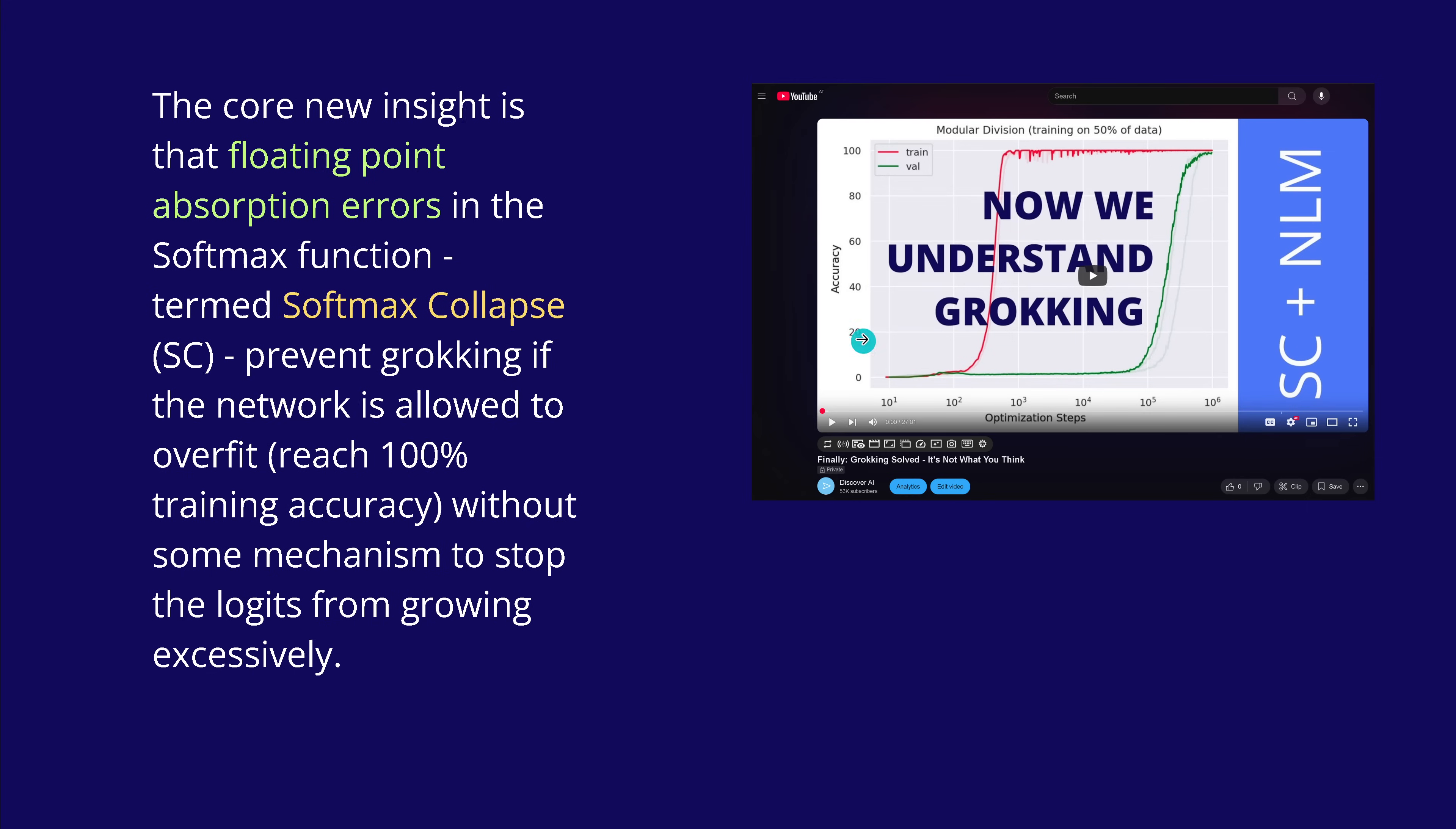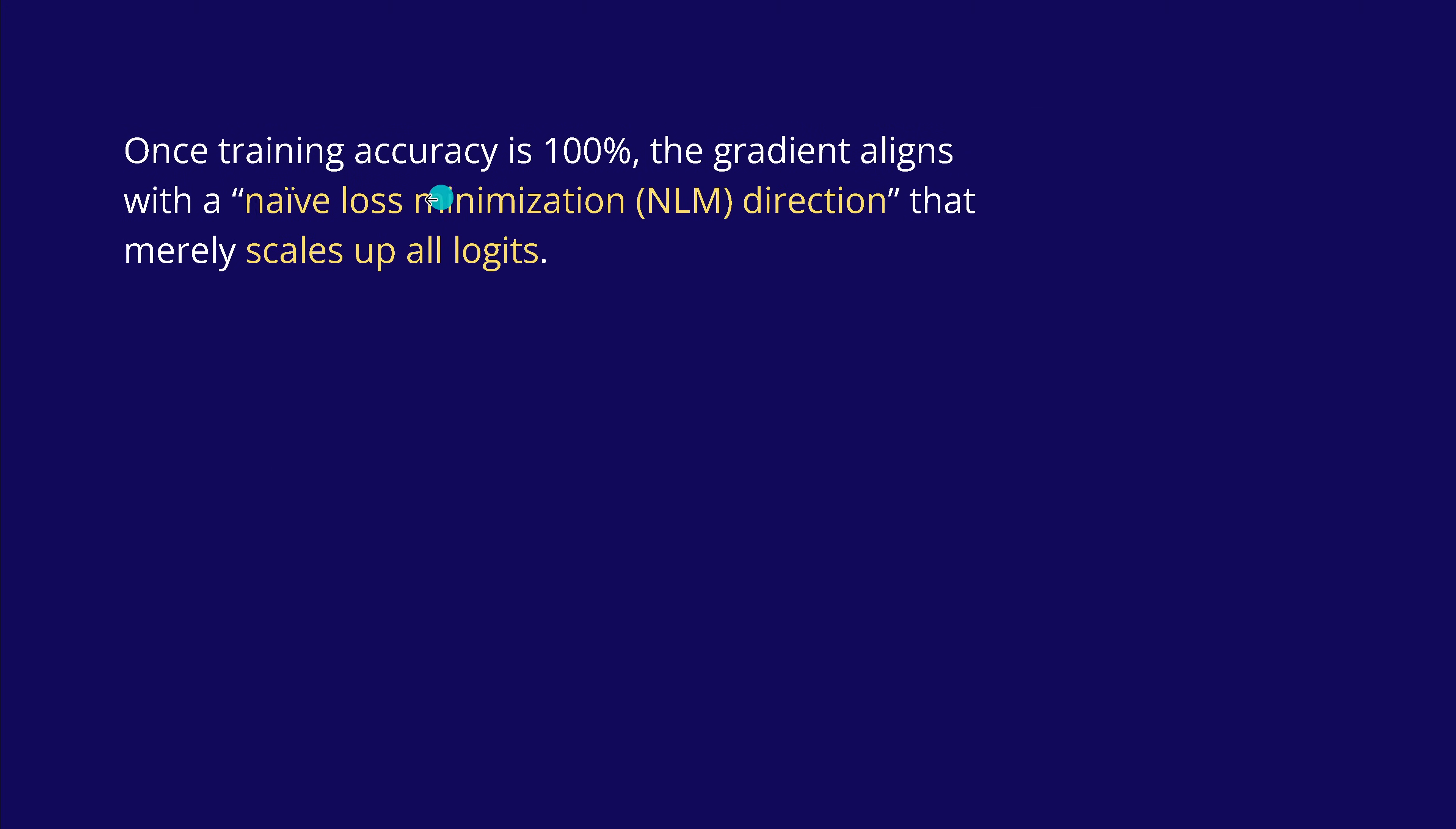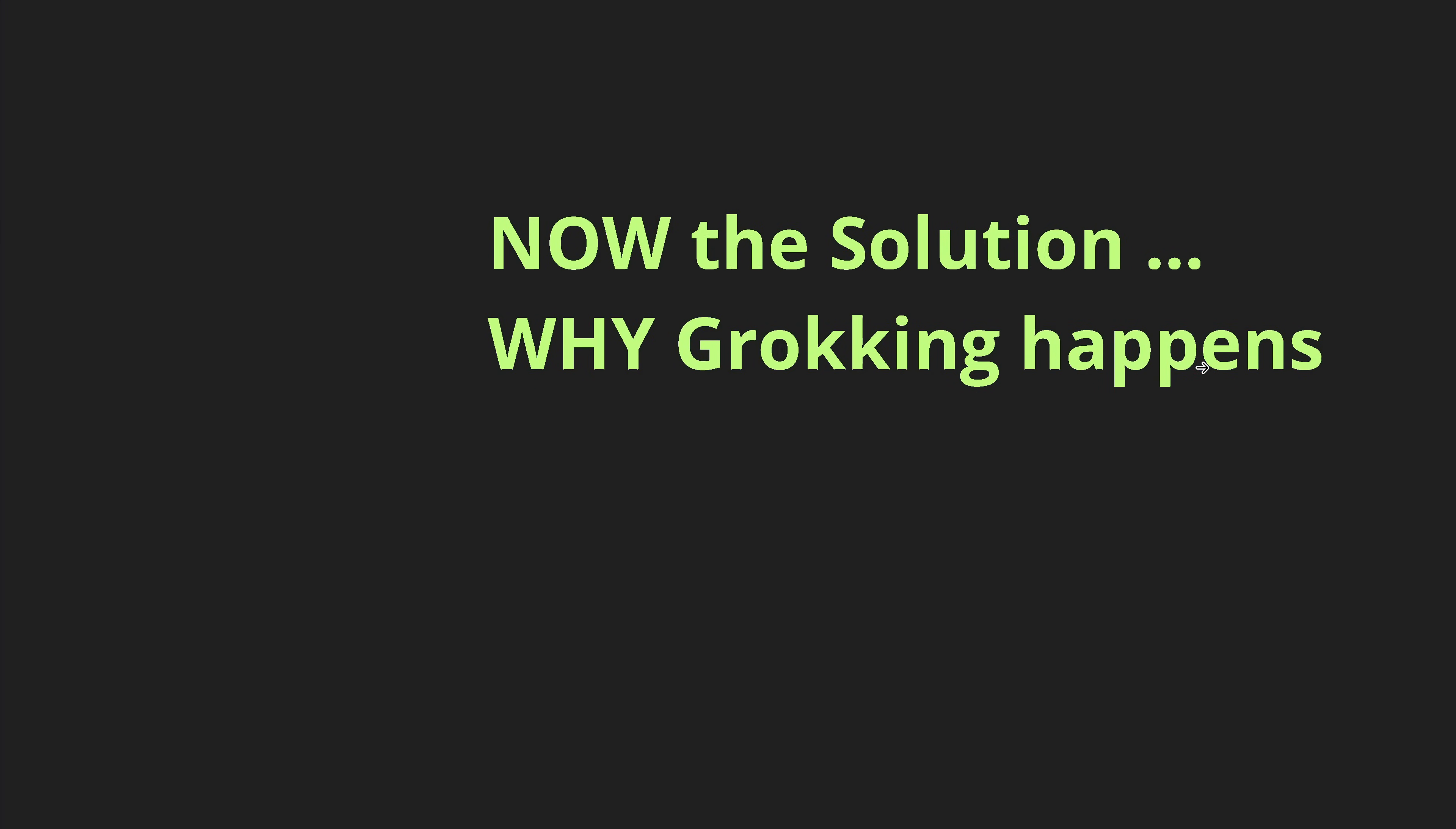So we understand from the last video that the core new insight is that the floating point absorption error in the softmax function, or softmax collapse, prevents here the grokking if the network is allowed to overfit, reach 100% training accuracy as indicated by the red line. And once this happened, the gradient now aligns here with a naive loss minimization direction that I showed you in my last video nearly scales up all logits.